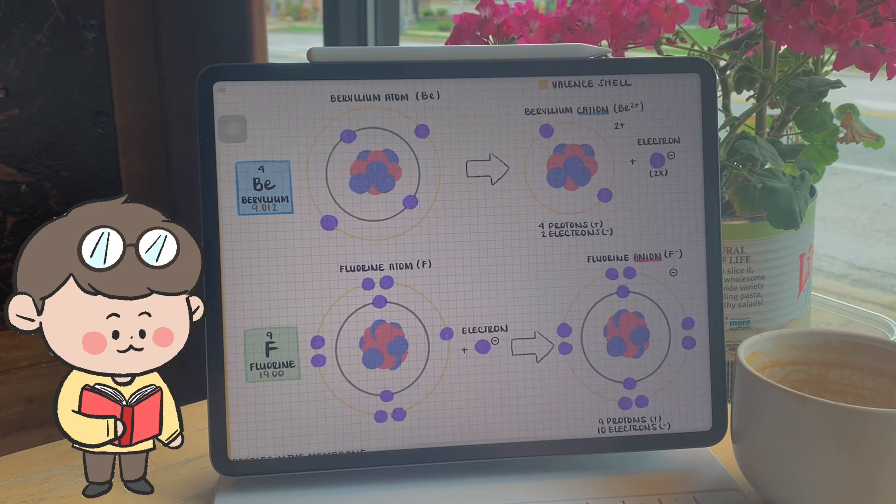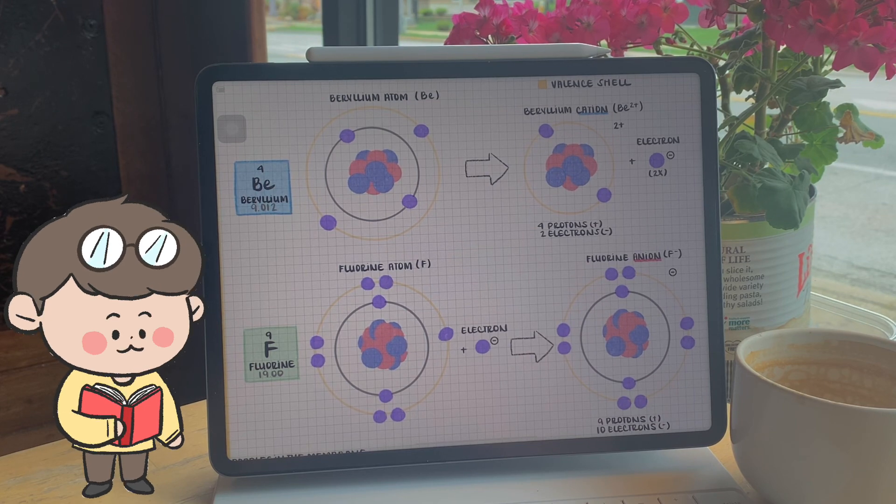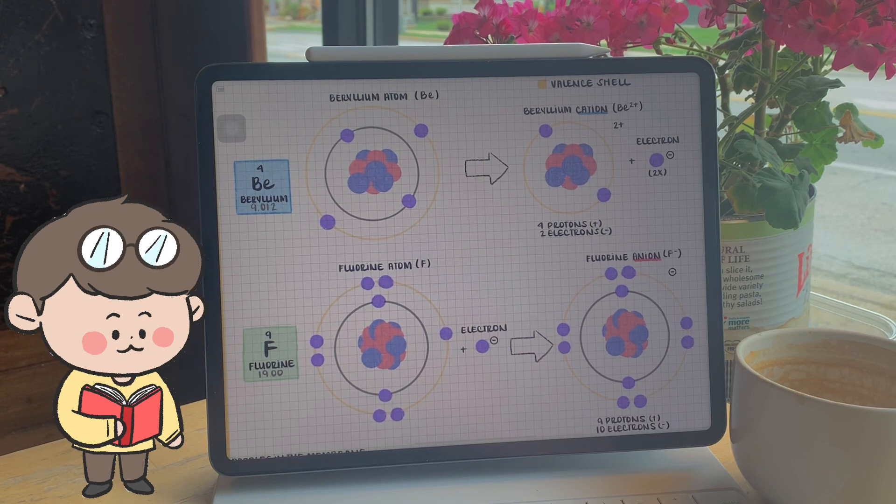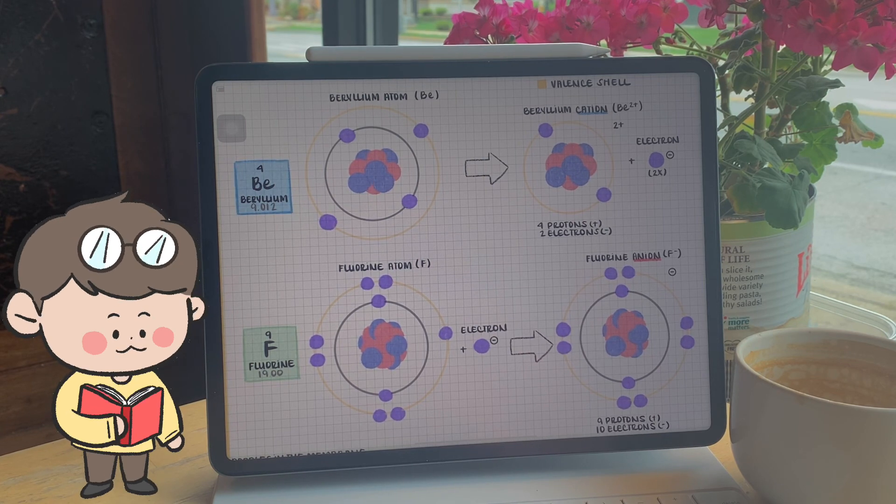For example, beryllium has a tendency of forming cations, losing two electrons, where fluorine has a tendency of gaining an electron and forming an anion.